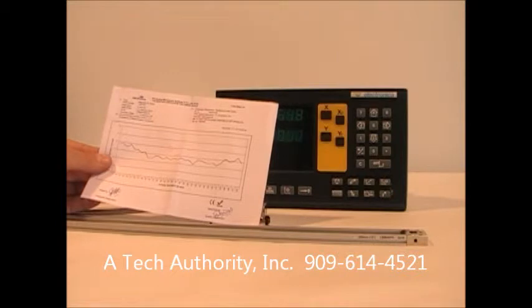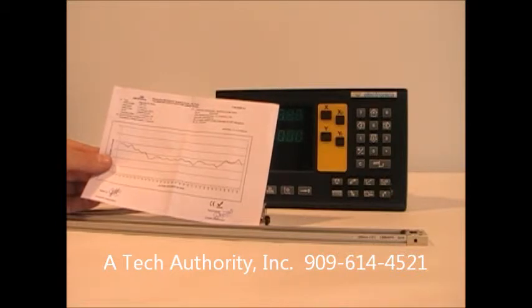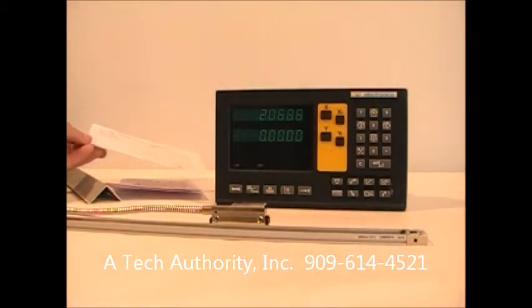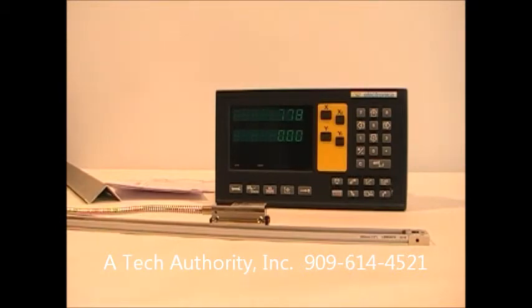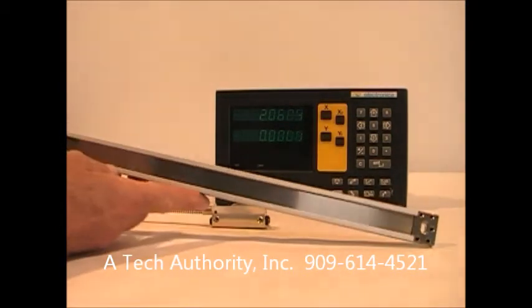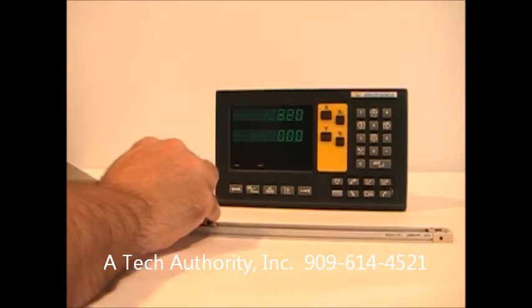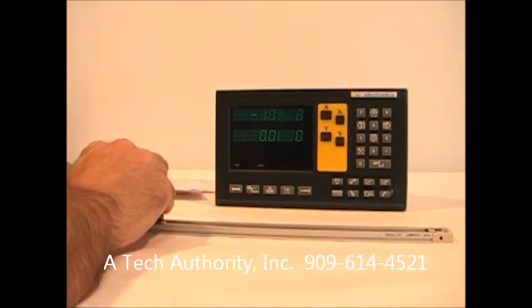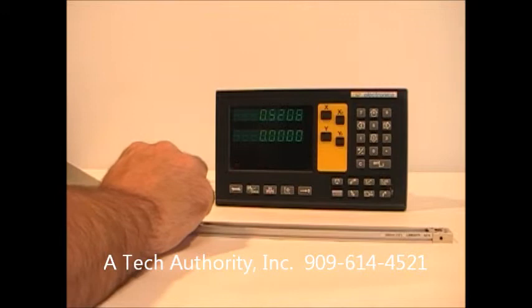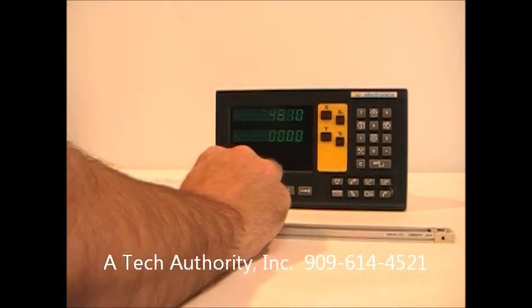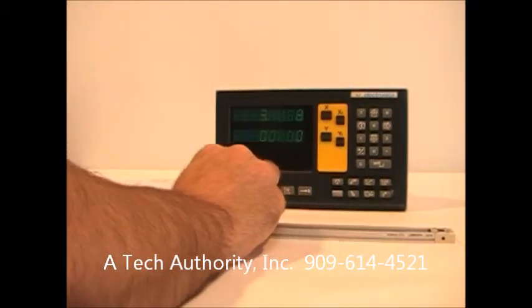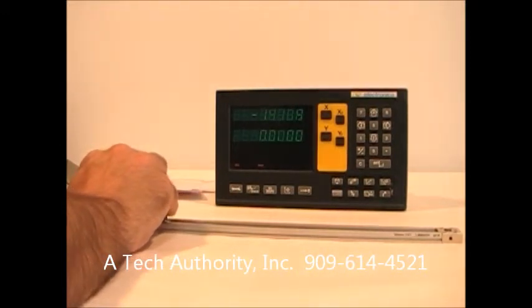Electronica says that their accuracy class of these scales is plus or minus 10 microns per meter. The resolution is, based on a TTL output, 5 micron. And as you can see, the display counts out four places to the right of the decimal. You can get some higher resolution scales, but standard packages are 5 microns.